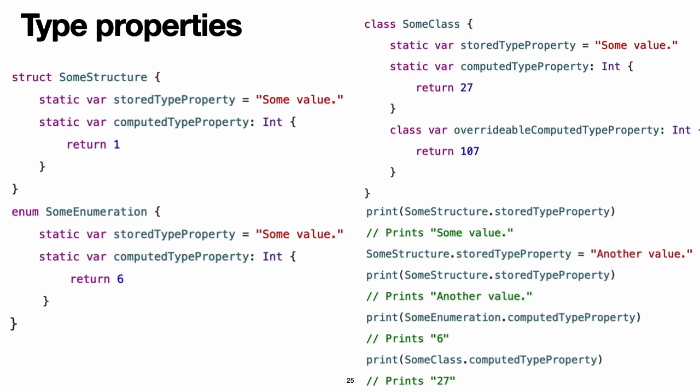Type properties: instance properties are properties that belong to an instance of a particular type. Every time you create a new instance of that type, it has its own set of property values separate from any other instance. You can also define properties that belong to the type itself, not to any one instance of that type. There will only ever be one copy of these properties, no matter how many instances of that type you create. These kinds of properties are called type properties, and they are useful for defining values that are universal to all instances of a particular type, such as a constant property that all instances can use — like a static constant in C — or a variable property that stores a value global to all instances — like a static variable in C. Stored type properties can be variables or constants. Computed type properties are always declared as variable properties.